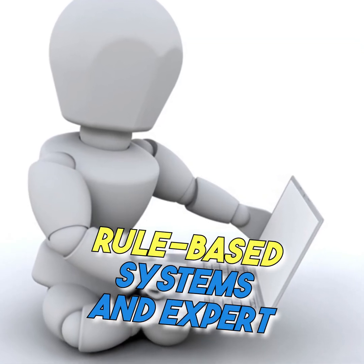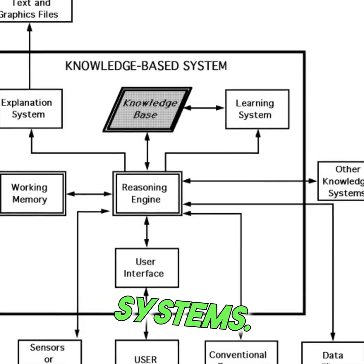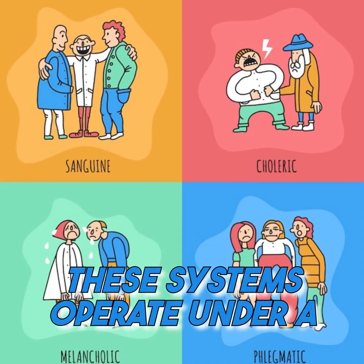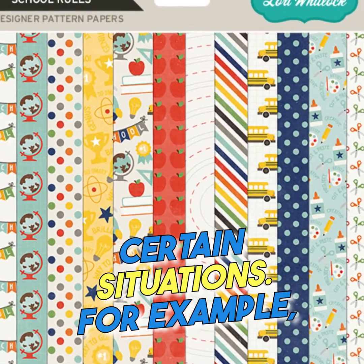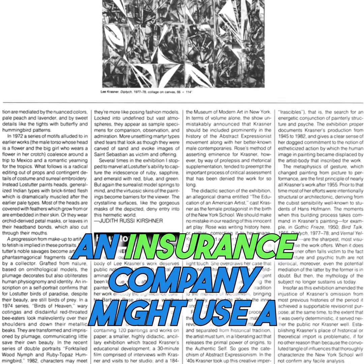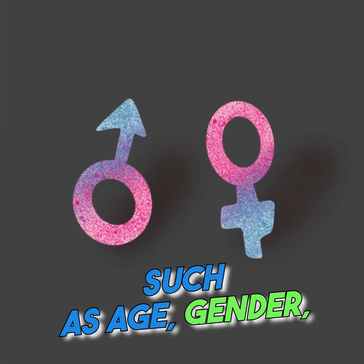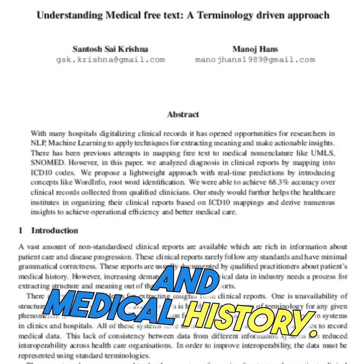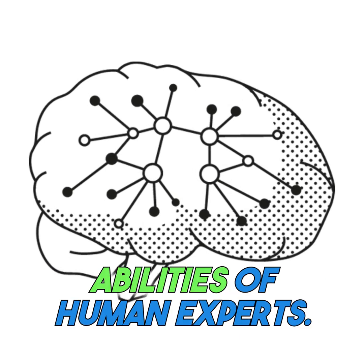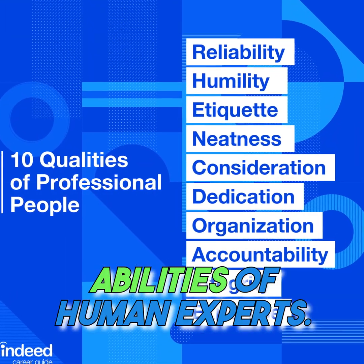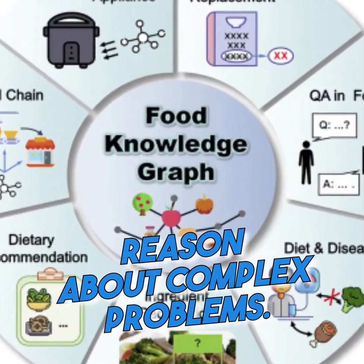Types of AI: Rule-based systems and expert systems. One of the most popular forms of AI is rule-based systems. These systems operate under a set of predetermined rules that determine how they behave in certain situations. For example, an insurance company might use a rule-based system to evaluate claims based on factors such as age, gender, and medical history. Another form of AI is expert systems, which mimic the decision-making abilities of human experts. These systems rely on knowledge representation techniques to reason about complex problems.